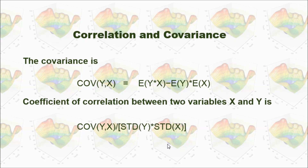In this way, the correlation will be between minus 1 and plus 1. When correlation is plus 1, that means it's perfect positive correlation. And if the correlation is negative 1, that means perfect negative correlation between x and y.